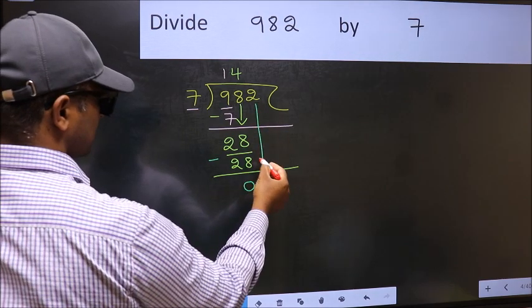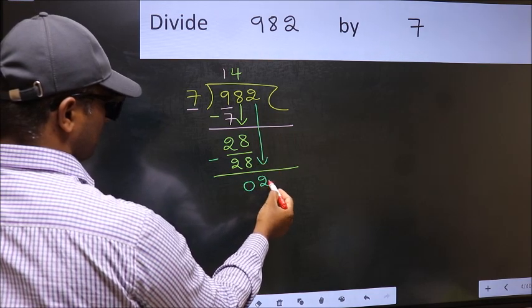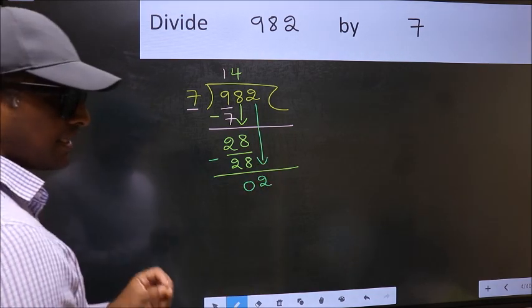After this, bring down the beside number. So 2 down. After this step, the mistake happens.